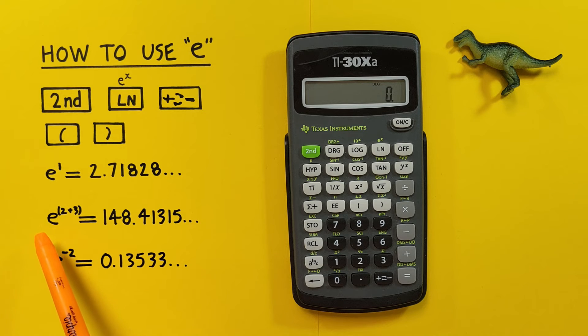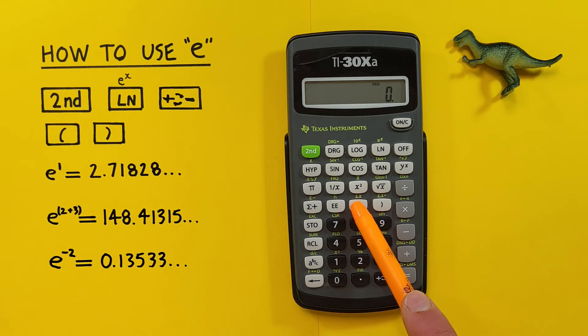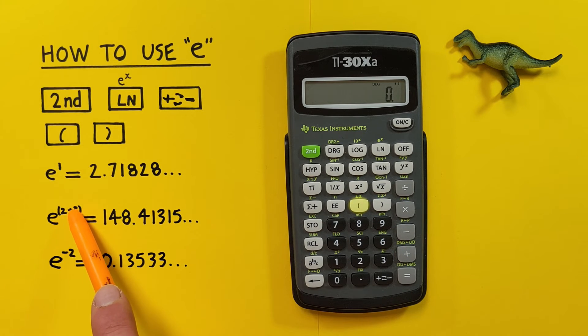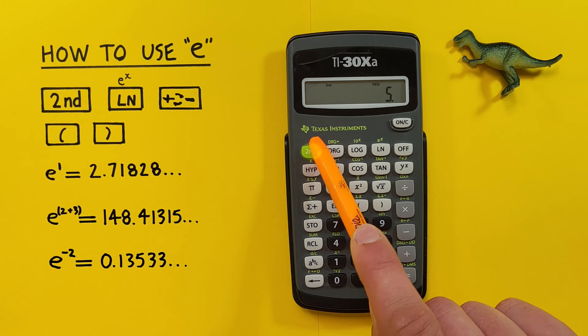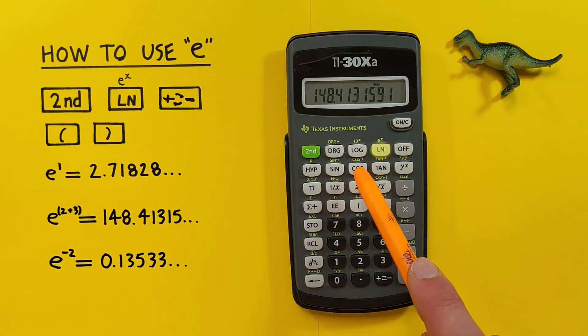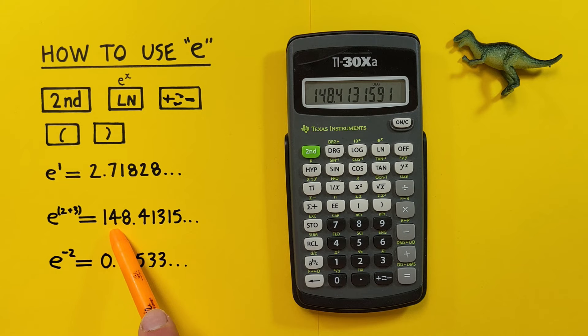If we want to find e to more complex exponents, we need to use our brackets. For example, if we want to find e to the power of 2 plus 3, we start by opening our brackets and entering what's inside, so 2 plus 3, and close our brackets. Then we press second ln and we get a result of 148.41315 etc.